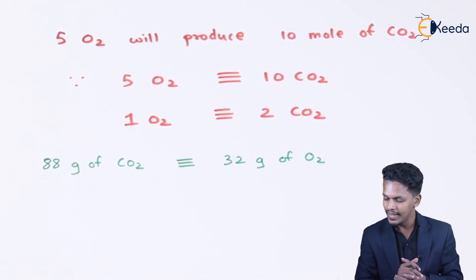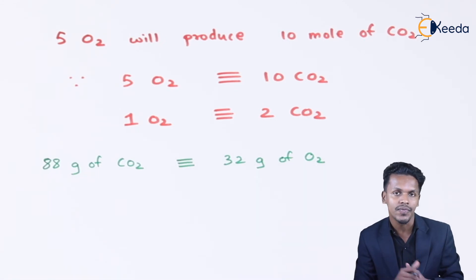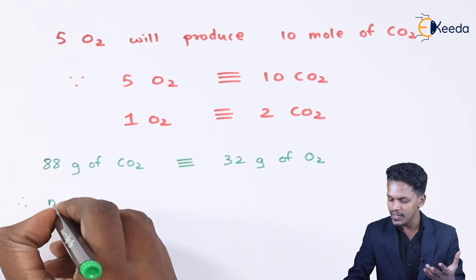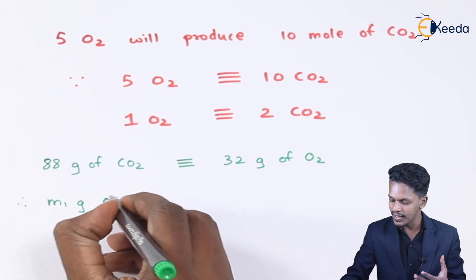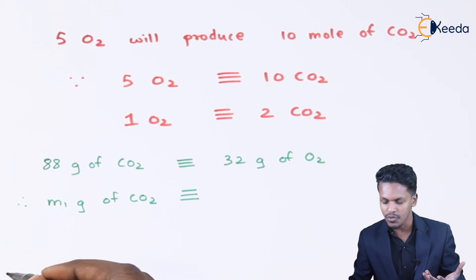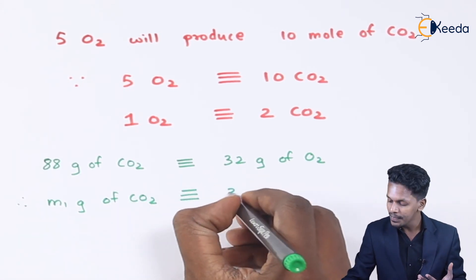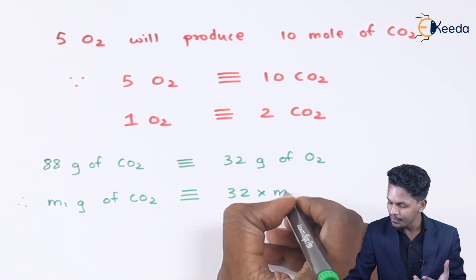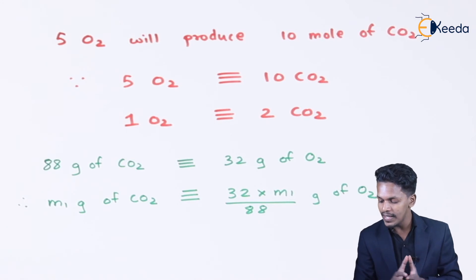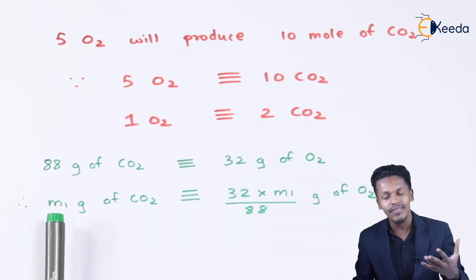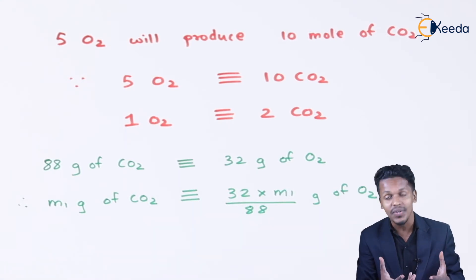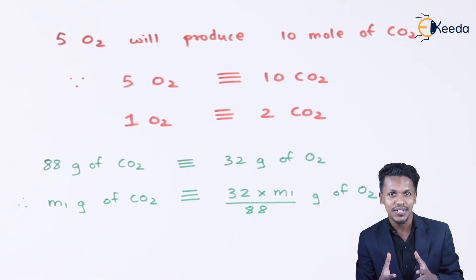Suppose we have to calculate the mass of carbon dioxide produced, and from that we get the percentage of oxygen. If M1 grams of carbon dioxide has been produced, then by cross multiplication, the mass of oxygen required to produce M1 grams of CO₂ is 32 × M1 / 88 grams of oxygen.